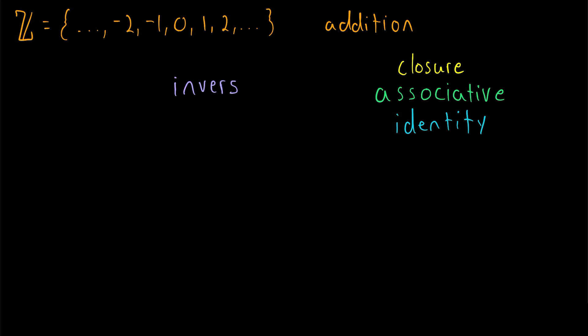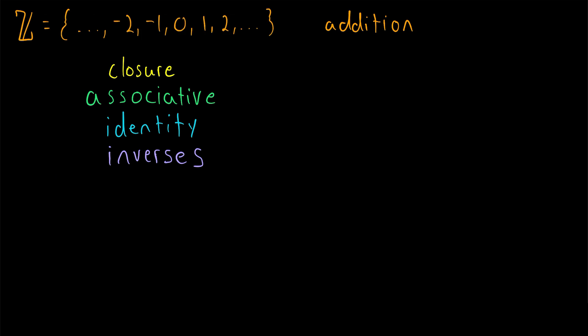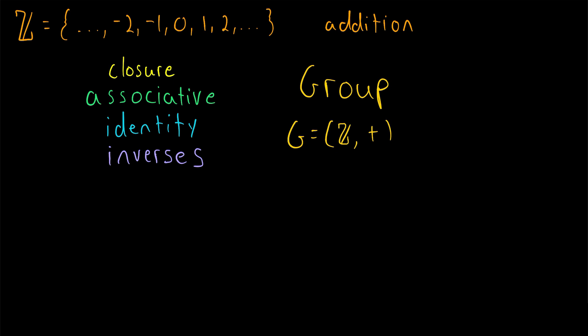The existence of inverses is the fourth group axiom. So if we have a set alongside a binary operation, and together they satisfy closure, associativity, an identity element, and all elements have inverses, then it is a group. This is a group: the integers under addition. We might call the group G and say it's the ordered pair consisting of the set of integers alongside the binary operation addition. Notice that although addition is commutative, commutativity is not a group axiom — the binary operation of a group may or may not be commutative.